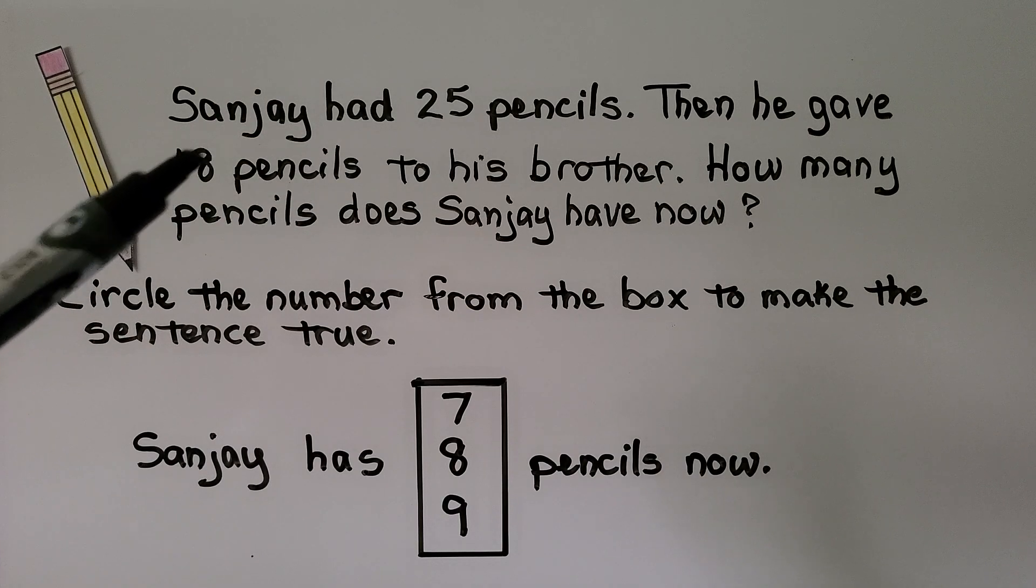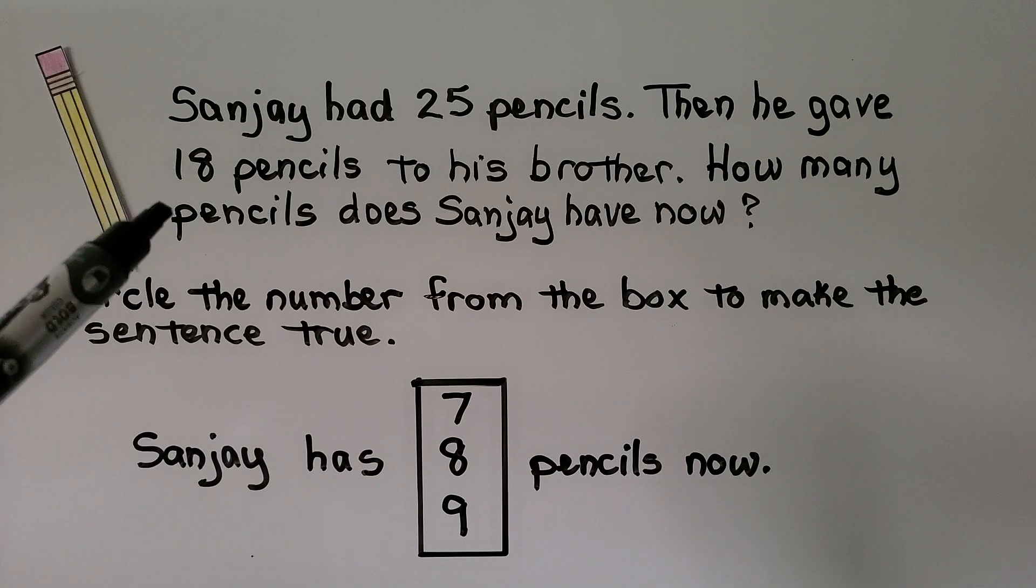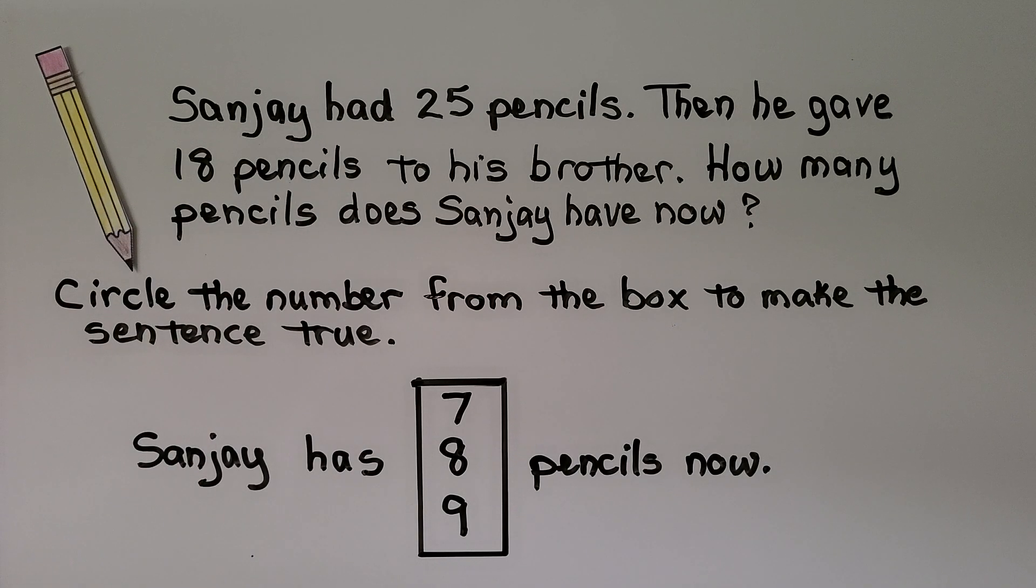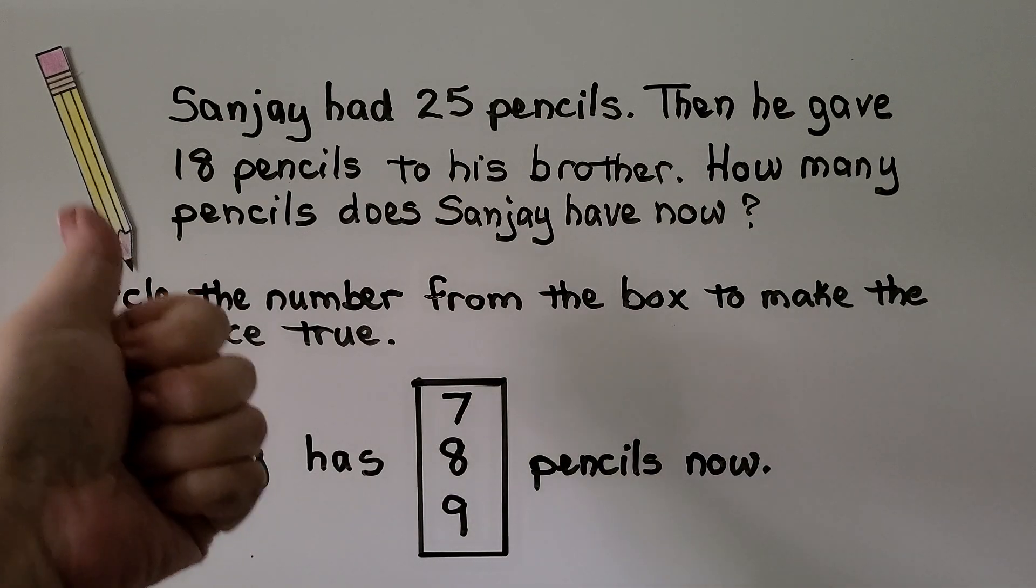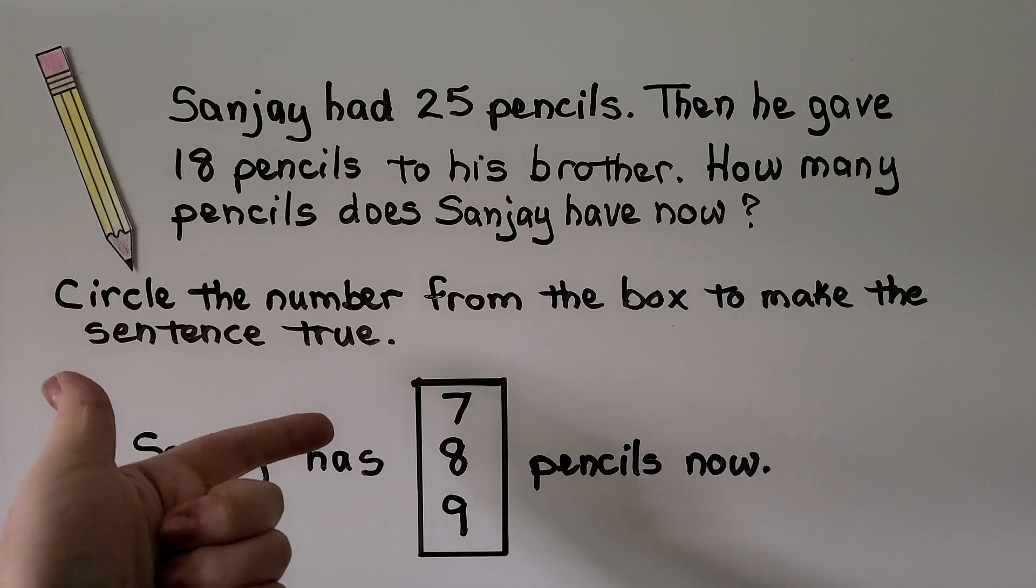He had 25, but he gave 18 away. That means we need to start at 18 and count on to 25. We can say 18, 19, 20. That's 2 to get to 20.